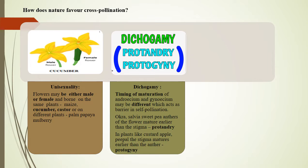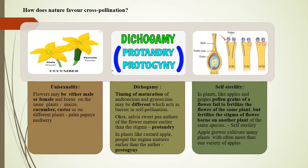Self-sterility: In some plants like apples and grapes, pollen grains of a flower fail to fertilize the flower of the same plant, but can fertilize the stigma of a flower on another plant of the same species. This is known as self-sterility. For this reason, apple growers cultivate many plants and often more than one variety of apple trees in their gardens.